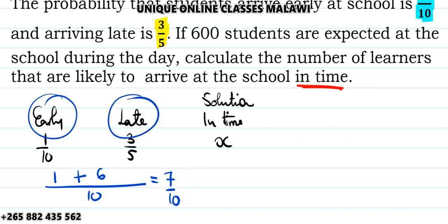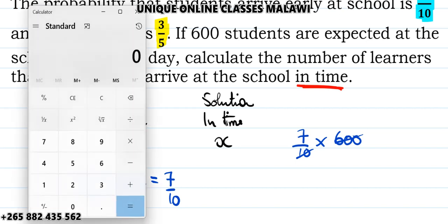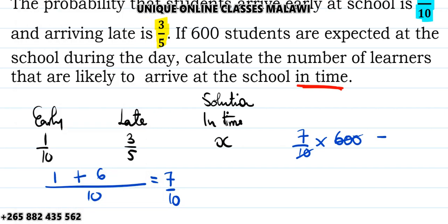Then we need to find the number. We multiply 7 over 10 times 600. 10 into 600 is 60, then 60 times 7 should be 420. So we have 420.